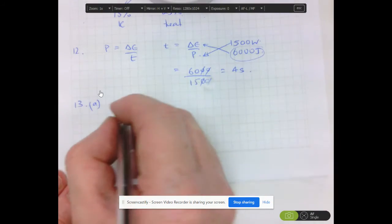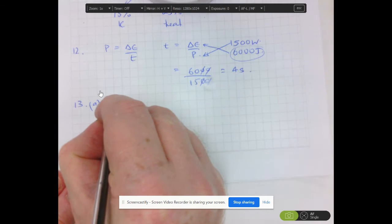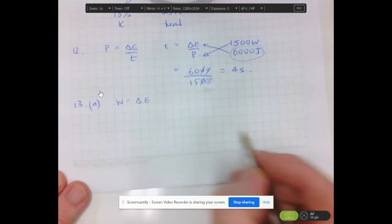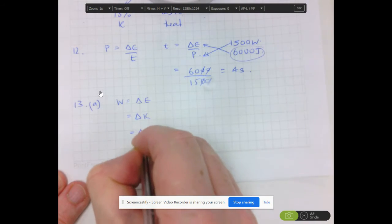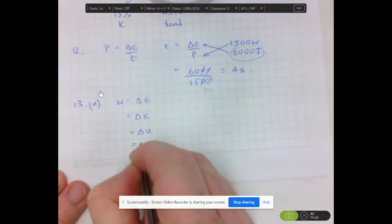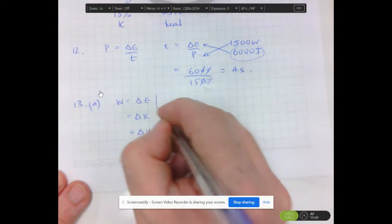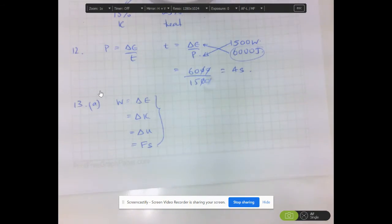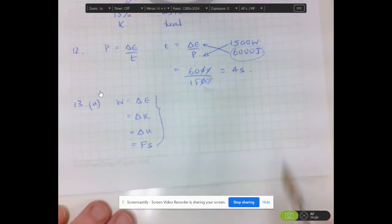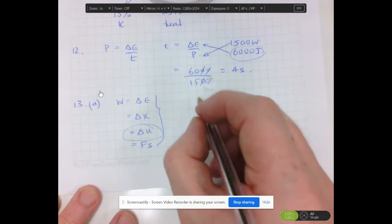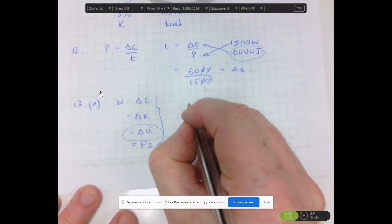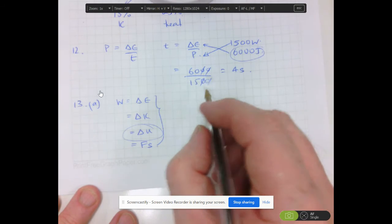Well, work would be given, work is the change of energy. So it's delta K. It's also delta U. It's also force times displacement. So those are the ways I can work out how much work is being done. And in this case, it's going to be delta U because we're going to be lifting this against gravity.